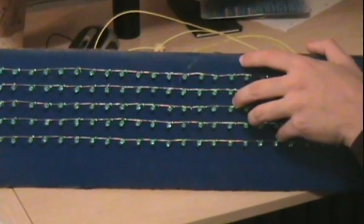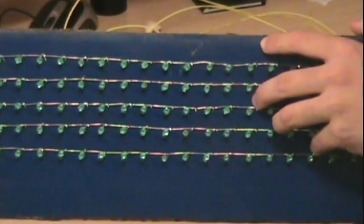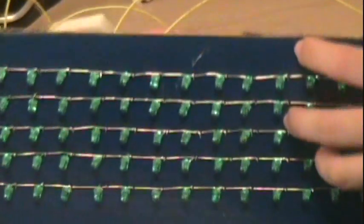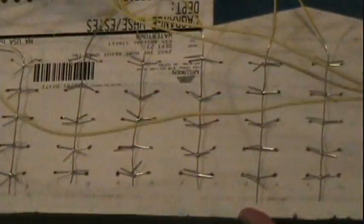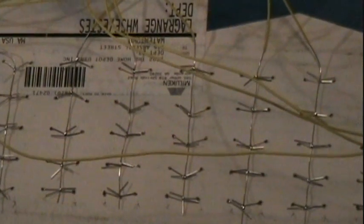Looking closely at the wiring, on the front, you have the row wires going all the way across, and on the back, you see that every two LED columns are connected to one column wire.